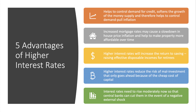A second advantage is that if interest rates went up, mortgage rates would presumably also increase, and that may cause a slowdown in the housing market — a fall in the rate of house price inflation — which, depending on what's happening to incomes and jobs, might help to make property more affordable over time.